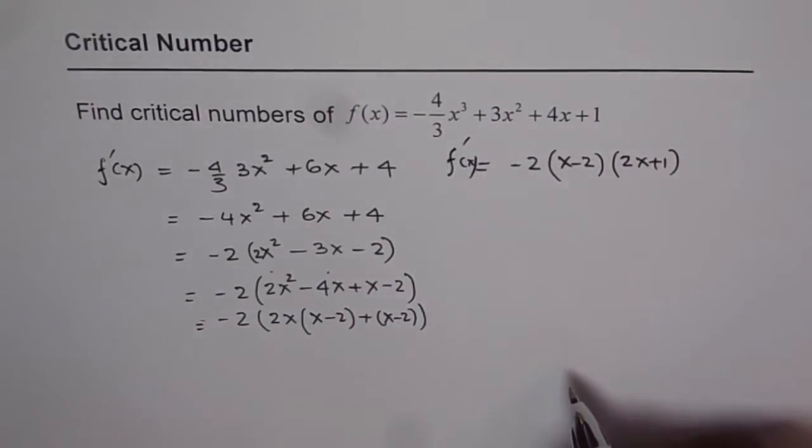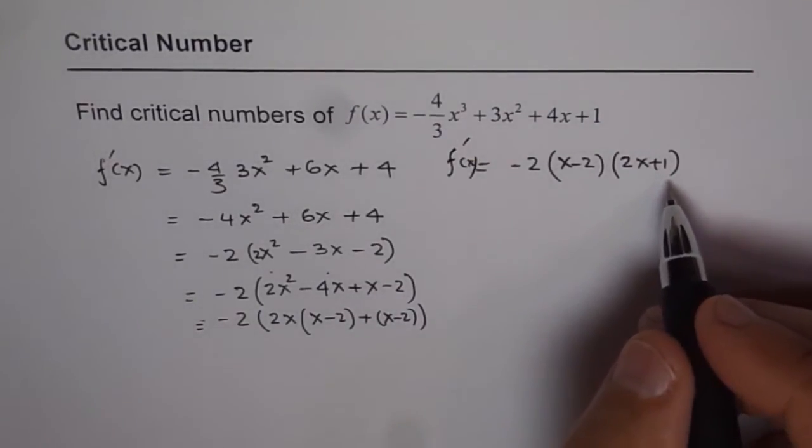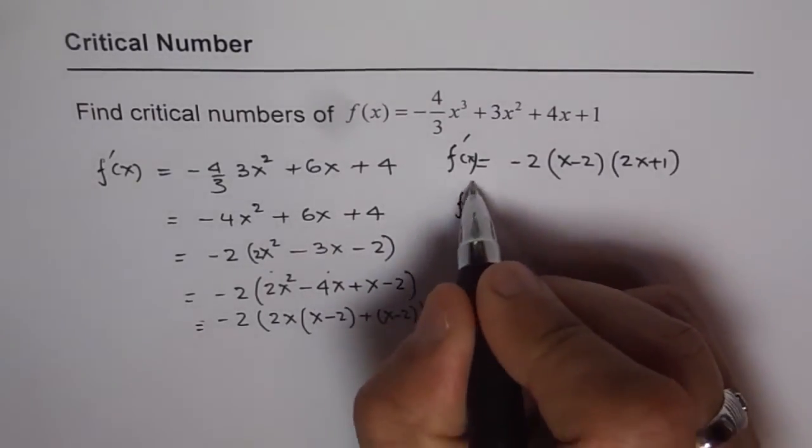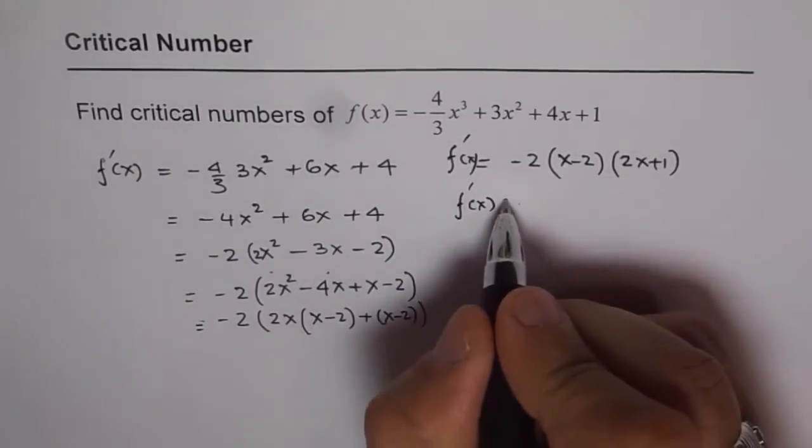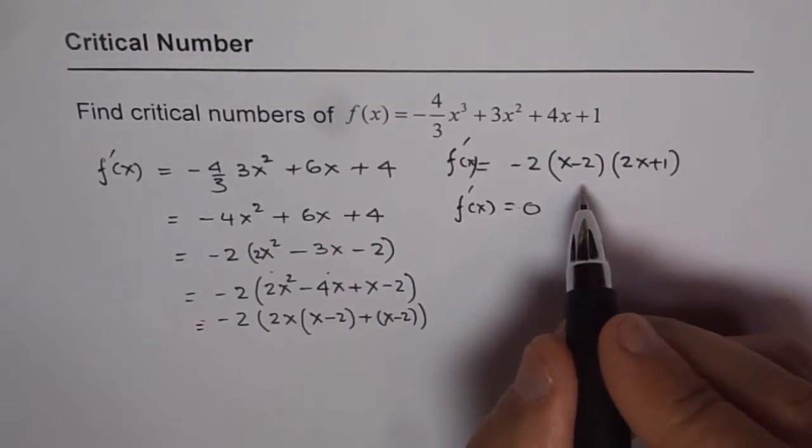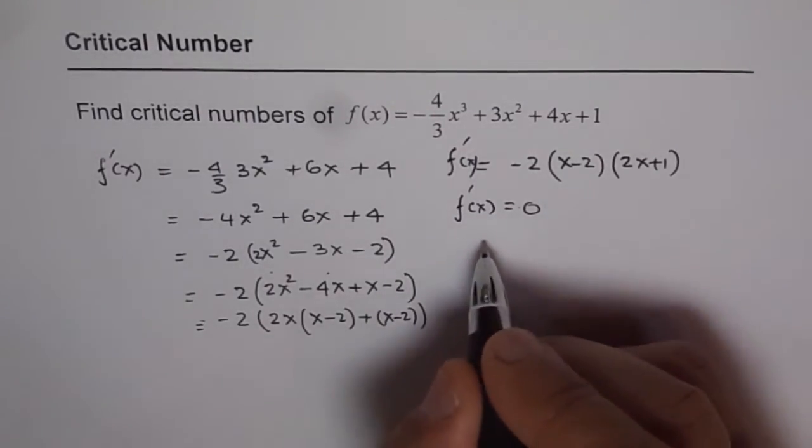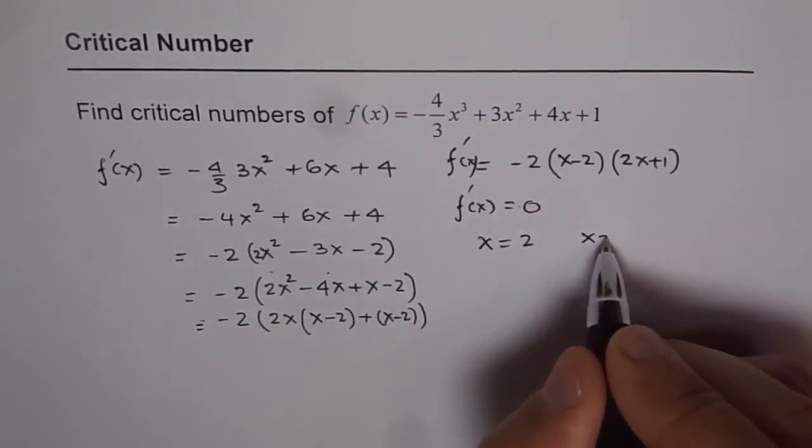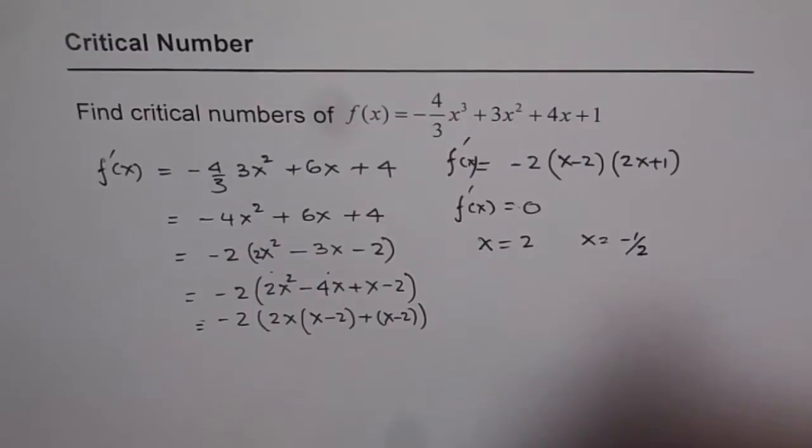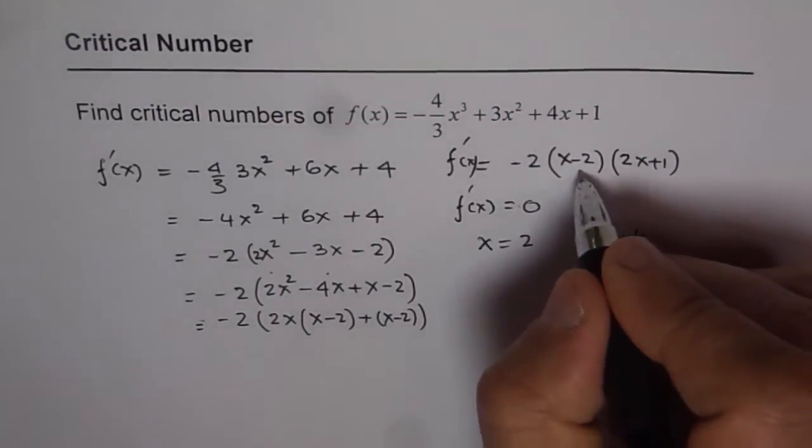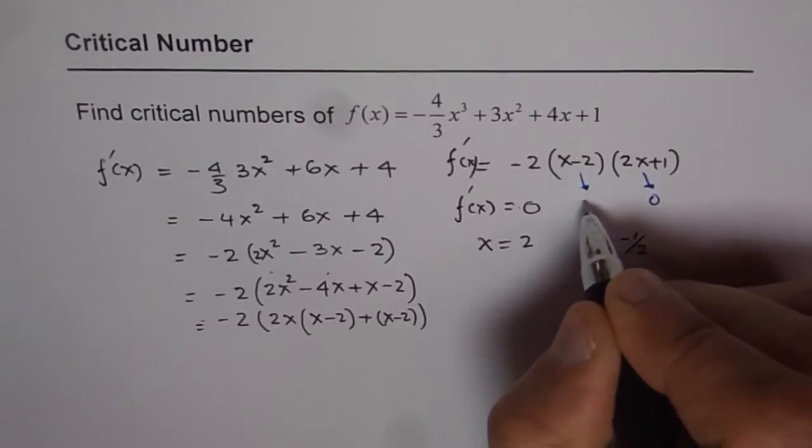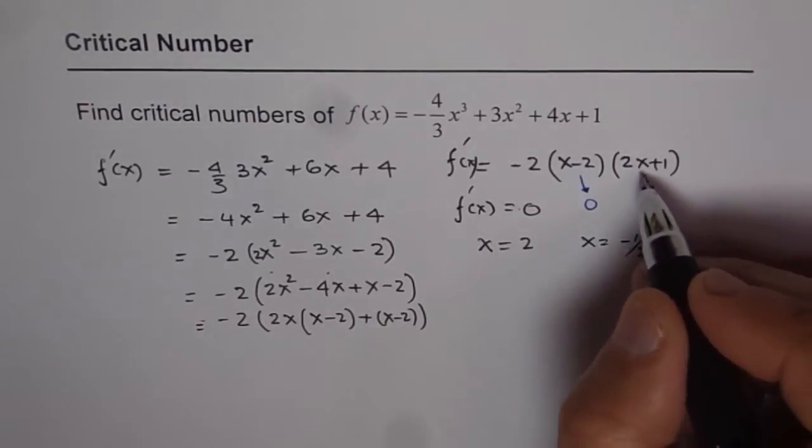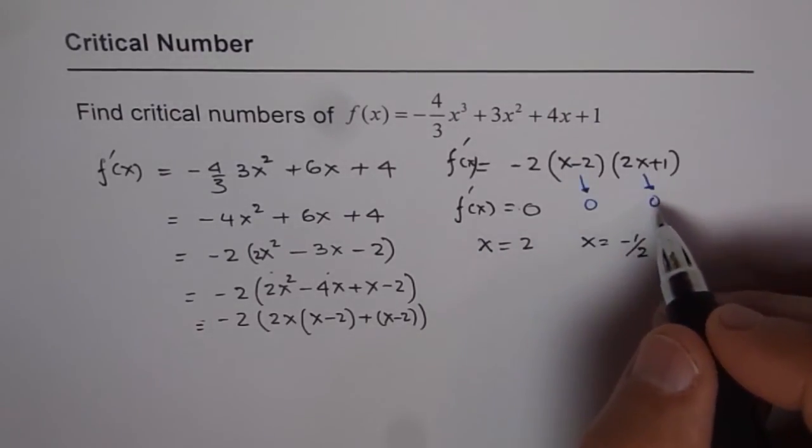Now, for critical points, this should be either 0 or undefined. This could be 0. There is no factor in the denominator. So for f'(x) = 0, we have two possibilities: either x = 2 or x = -1/2, by equating these factors to 0.